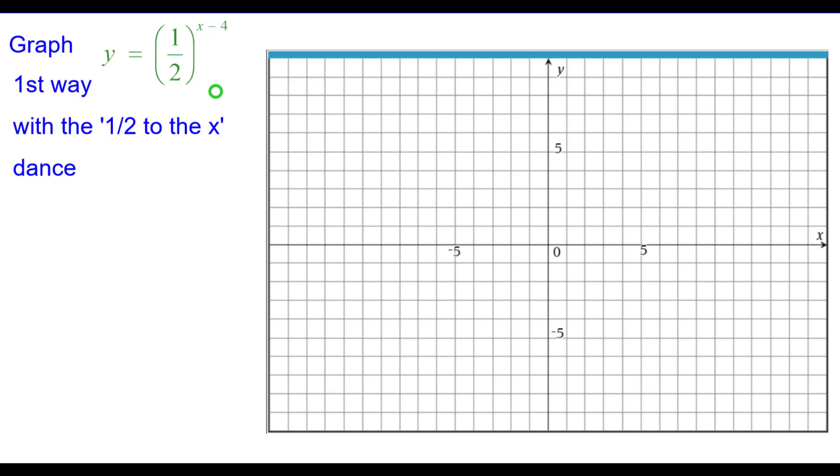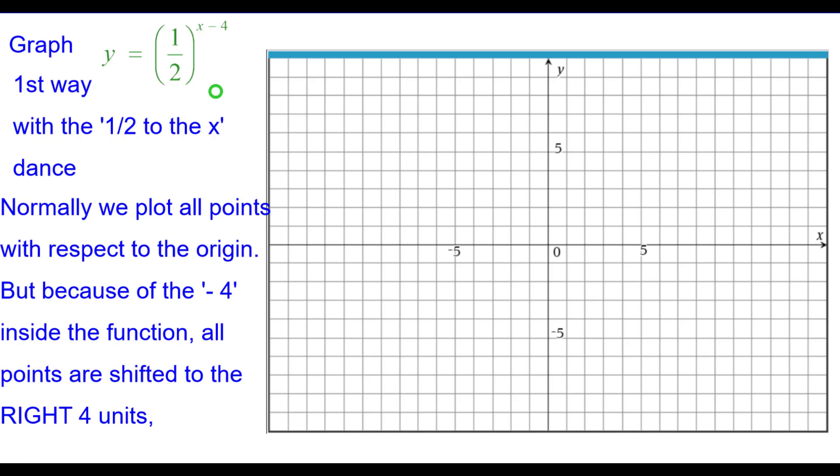The first way is with the one-half to the x power dance. Normally, we plot all points with respect to the origin, but because of the minus 4 inside the function, all points are shifted to the right four units. So our new origin will be at the point (4, 0), and all points will be plotted with respect to this new origin.